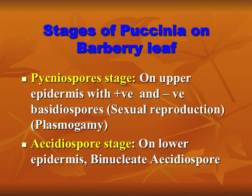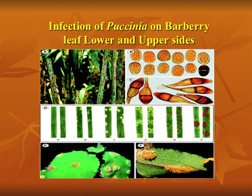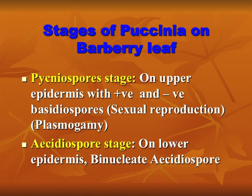The fourth spore type is aecidiospores, formed on the barberry plant. Aecidiospores are also binucleated unicellular members, formed on the upper and lower surfaces of barberry plant leaves. The fifth type is pycnidiospores. Both pycnidiospores and aecidiospores are formed by monocaryotic mycelium.